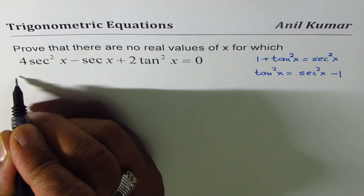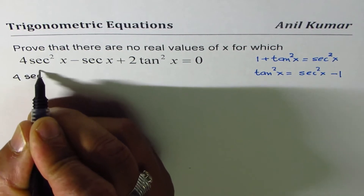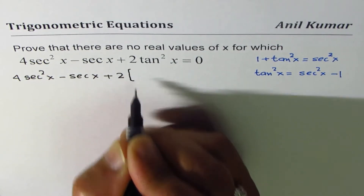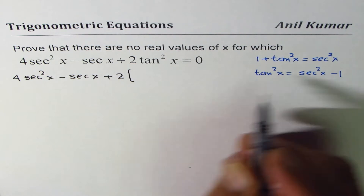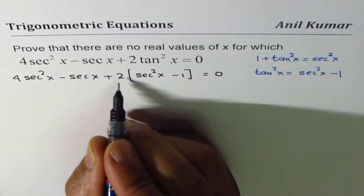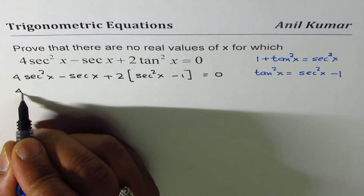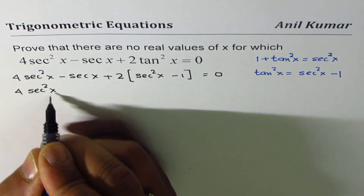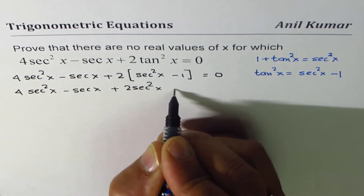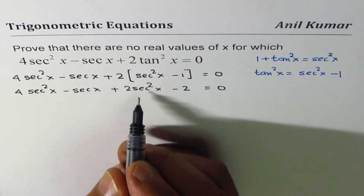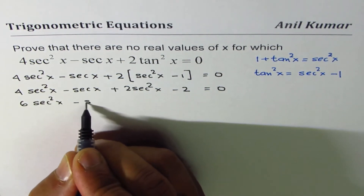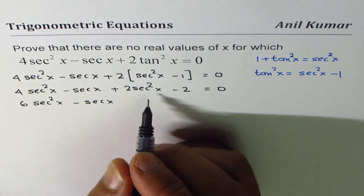The equation can be rewritten as 4sec²x minus sec x plus 2(sec²x minus 1) = 0. Expanding and combining like terms, we get 4sec²x minus sec x plus 2sec²x minus 2 = 0, which gives us 6sec²x minus sec x minus 2 = 0.